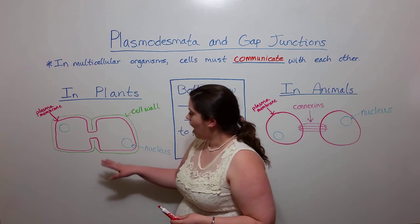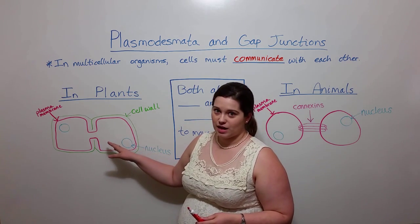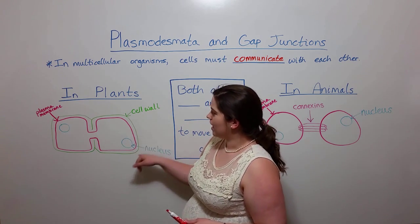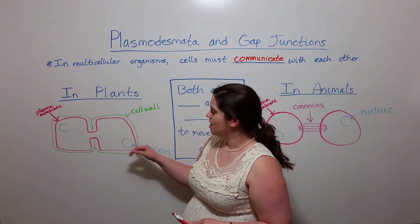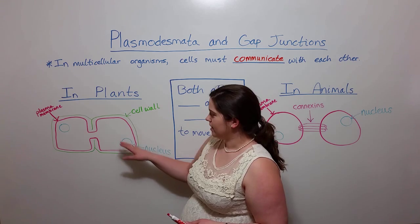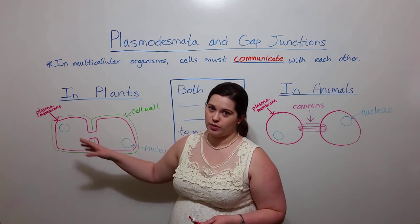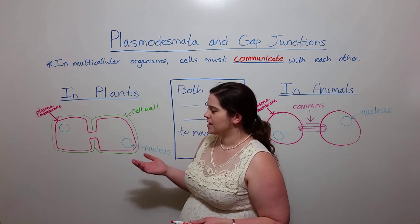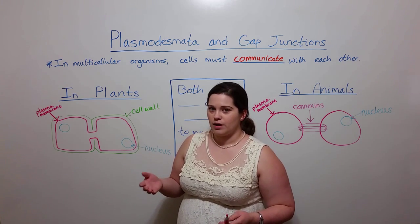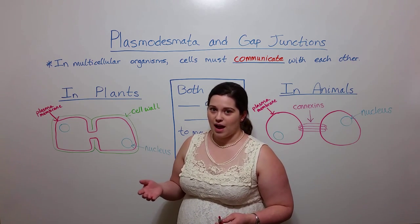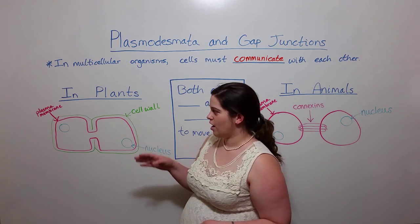First, I've drawn two plant cells here. We've got the cell wall in green surrounding the plasma membrane in red. I've also drawn in the nucleus of each cell in blue. And for the sake of simplicity, I've left out several other important organelles. Things like mitochondria, chloroplasts, the central vacuole, are not pictured here.